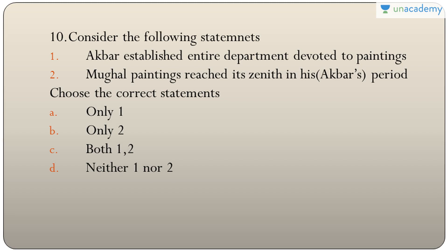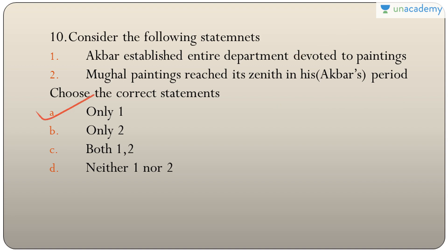Question ten: statements about Akbar — he established an entire department devoted to paintings (true), and Mughal paintings reached their zenith during his period. Mughal paintings actually reached their zenith during Jahangir's reign. The answer is A — only one.